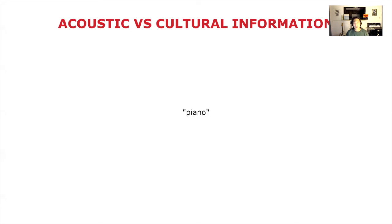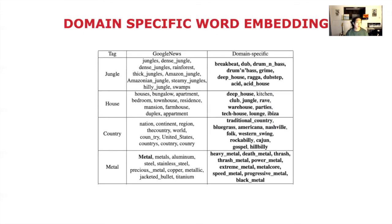The third topic is pre-trained word embedding. We compared the widely used Word2Vec with our own word embedding. Since Word2Vec was trained on Google News, there is a possibility that it has less musical context. So we pre-trained our own word embedding using album reviews, music biographies, and Wikipedia pages. As you can see from the table, our proposed word embedding includes more musical context.